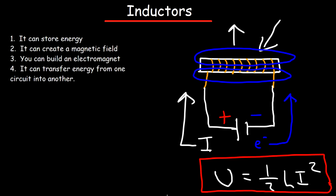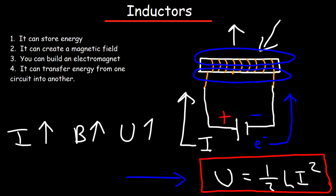I is the current. So as you can see, the potential energy stored in the magnetic field of the inductor is based upon how much current is flowing in a circuit. As the current increases, the strength of the magnetic field increases, meaning the magnetic field also expands, and you're going to have more potential energy stored in that inductor.